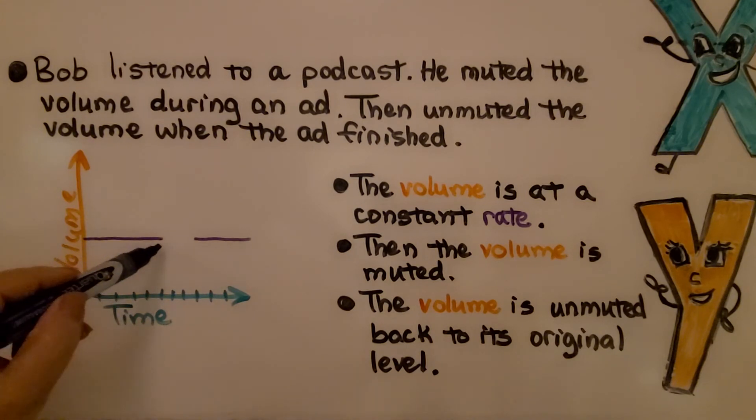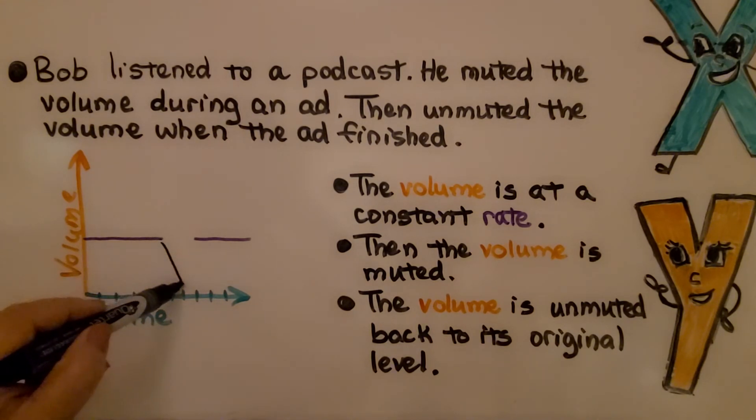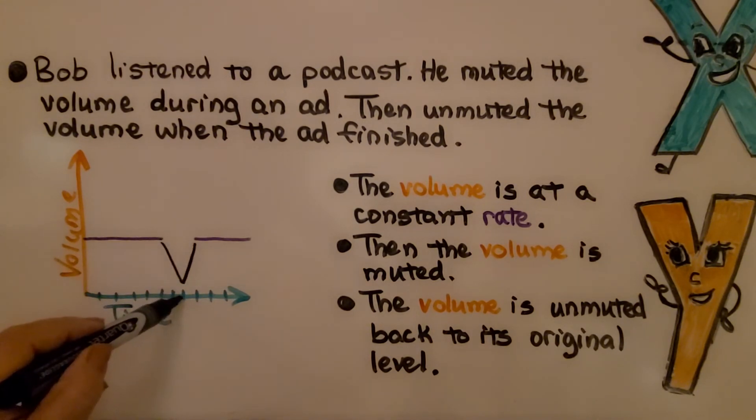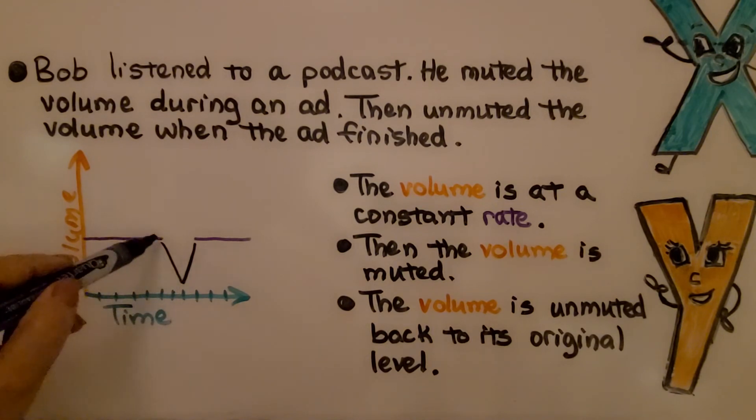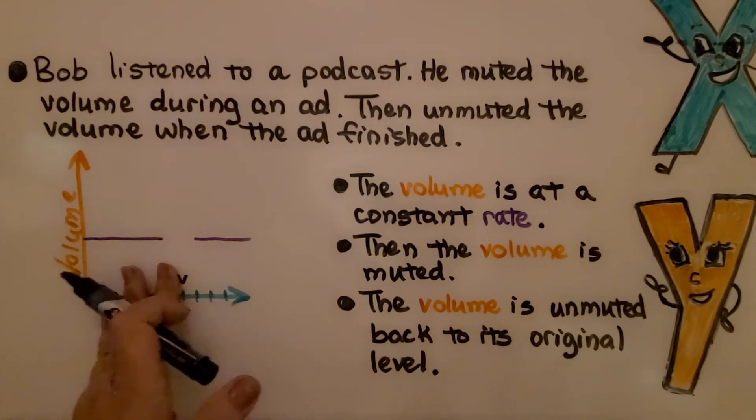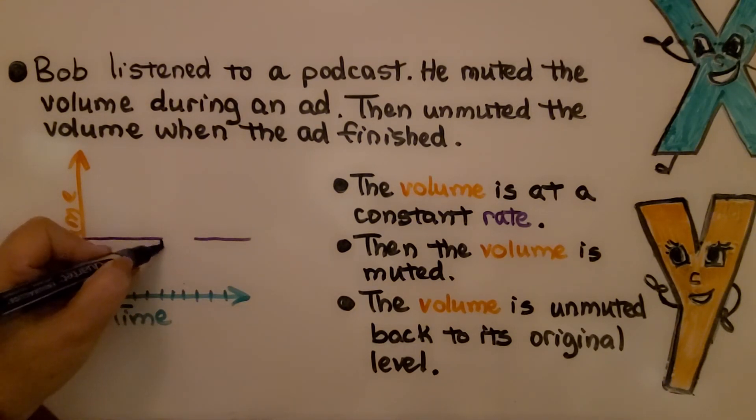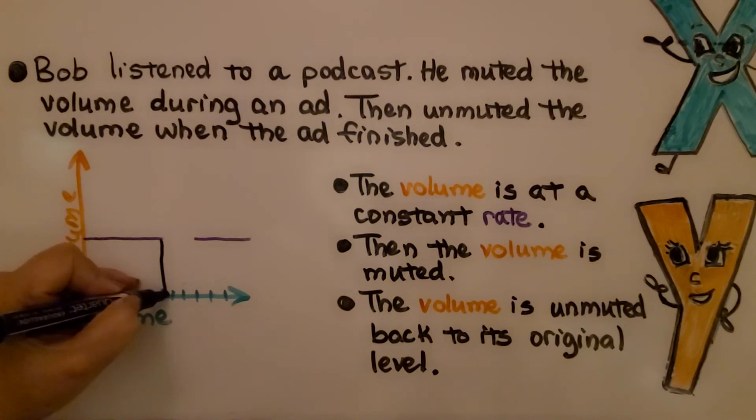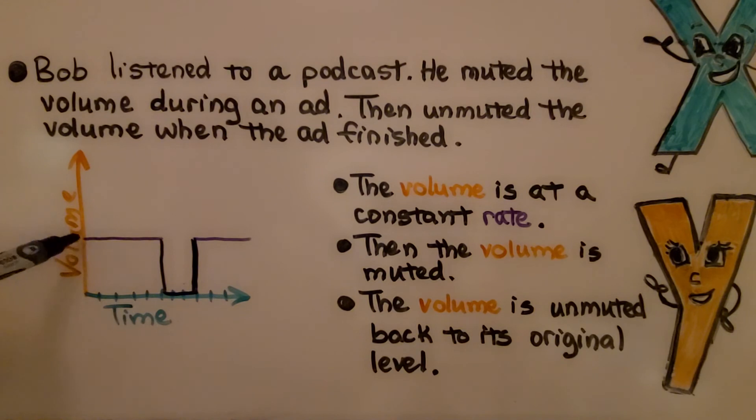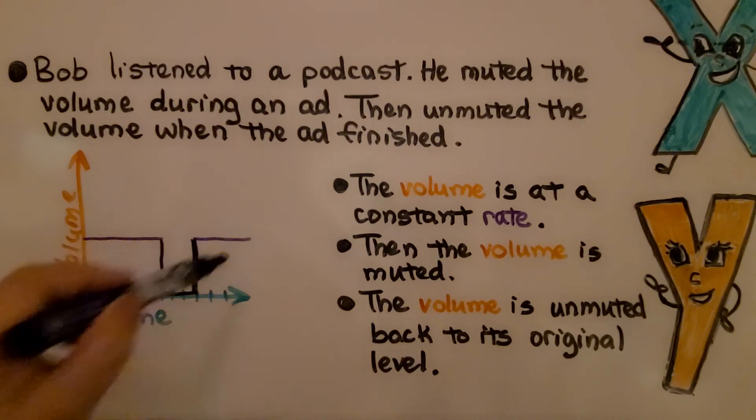Now we can't do a V here to show it going down to zero because it didn't gradually go down then gradually go up. He muted it completely. So we might say it went straight down to zero then straight back up again. But we still have this line to show it was constant, then it was off, then it was constant.